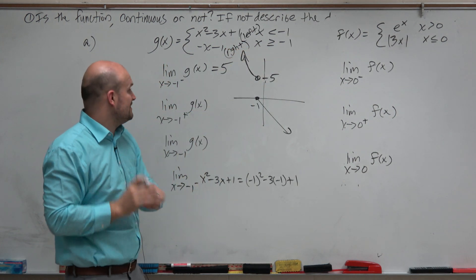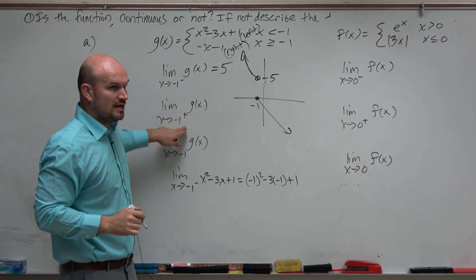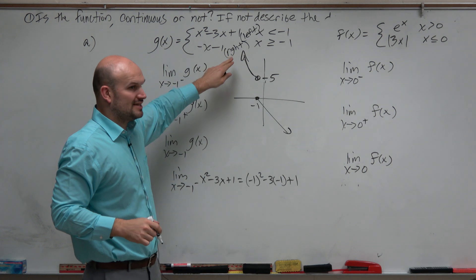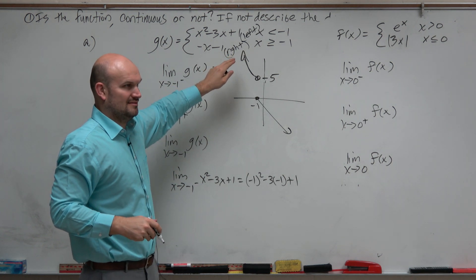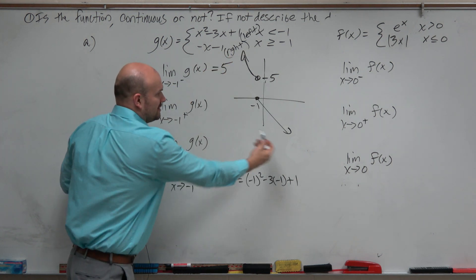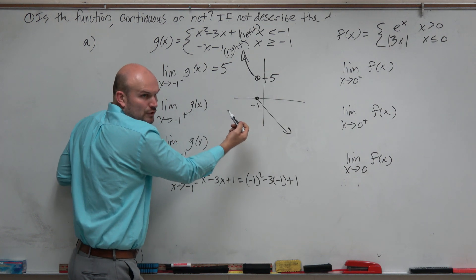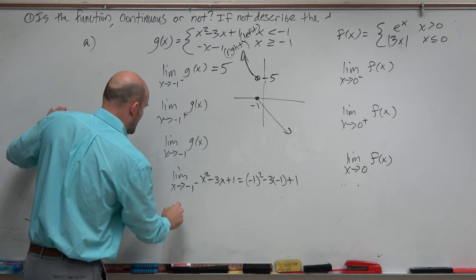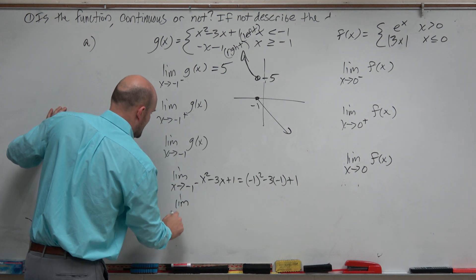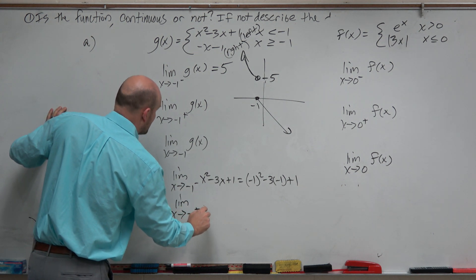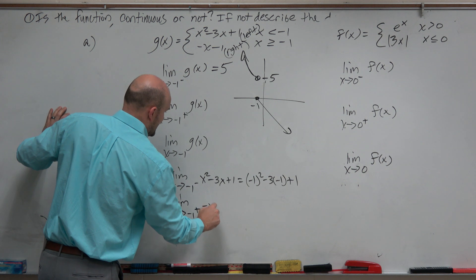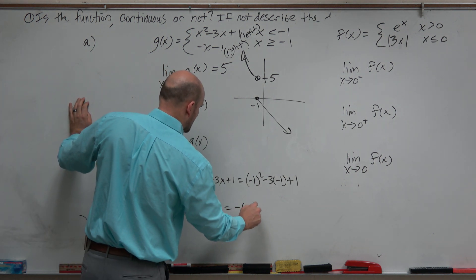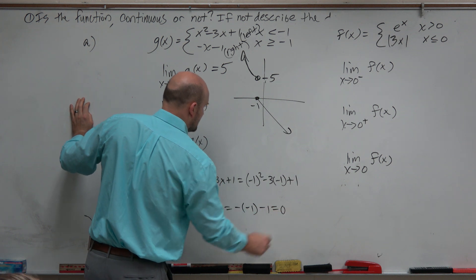So if I want to evaluate the right-hand limit, I should plug negative 1 into my right function. I want to look at what's happening to the right. If you already have the graph, you should already know the answer is 0. But let's plug it in to make sure that's correct. The limit as x approaches negative 1 from the right would be negative x minus 1. I plug in negative 1, use my parentheses, and I get 0.